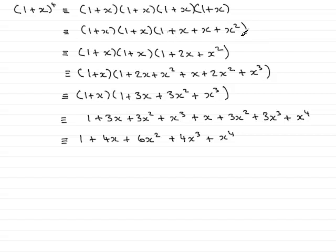Tidy up the last bracket, I get this. Then multiply the 1 plus x with everything in this bracket and I get this line. Tidy this bracket up, I get this line. Multiply out finally by the 1 plus x, I get this line. And tidy up again, I get this line.